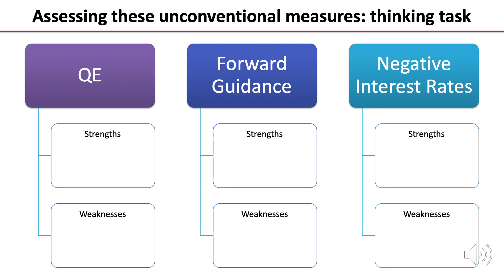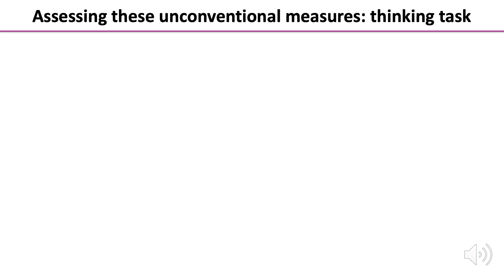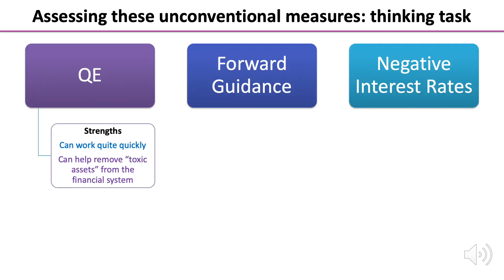Now let's see how you got on when you were addressing those three different areas of monetary policy and trying to pick out the strengths and weaknesses. Let's start off with quantitative easing. Strengths: we know it can work quite quickly. The central bank can effectively create new money at the stroke of a computer key and it can use that new money to buy bonds.